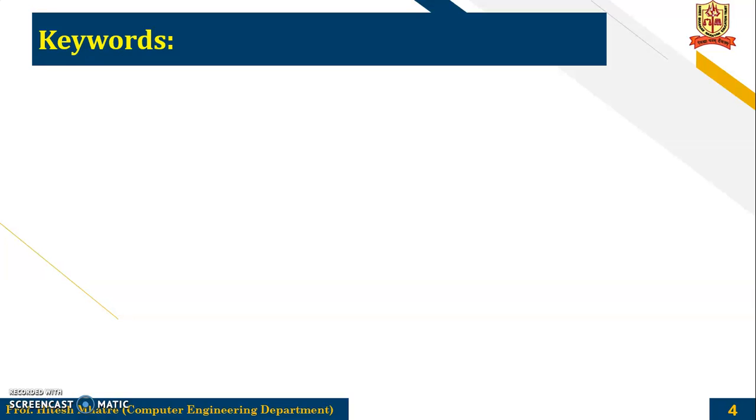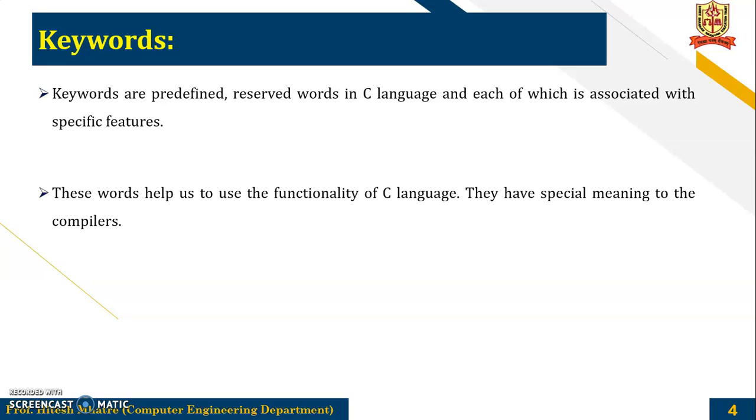Next is Keywords. Keywords are predefined or reserved words in C language and each of which is associated with specific features. So these have some special meanings. These words help us to use the functionality of the C language. They have some special meanings to the compiler. There are total of 32 keywords in C.